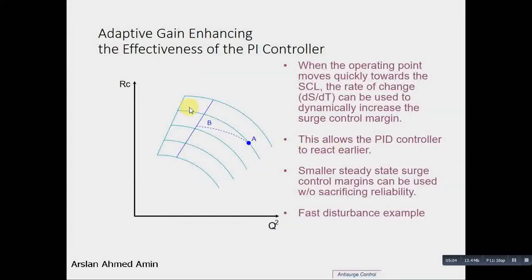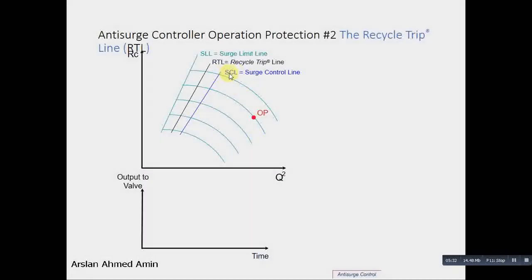If the surge point comes very fast to this point, we can use the rate of change, or derivative, this magnitude, and give this much higher response to the control valve, which is also known as the recycle trip response. This is the surge control line and this is the recycle trip line. This is for the derivative action. This is the proportional and integral action, and the recycle trip line is the derivative action.